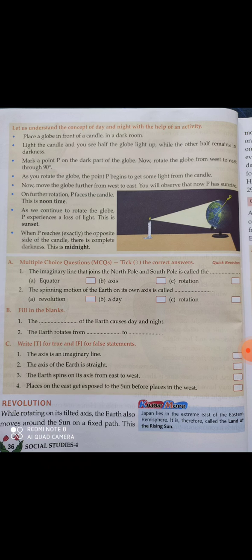When P reaches exactly the opposite side of the candle, there is complete darkness — this is midnight. When P goes to the direction completely opposite to the candle, P receives no light at all. This means now it is night — it has become dark and it is midnight.